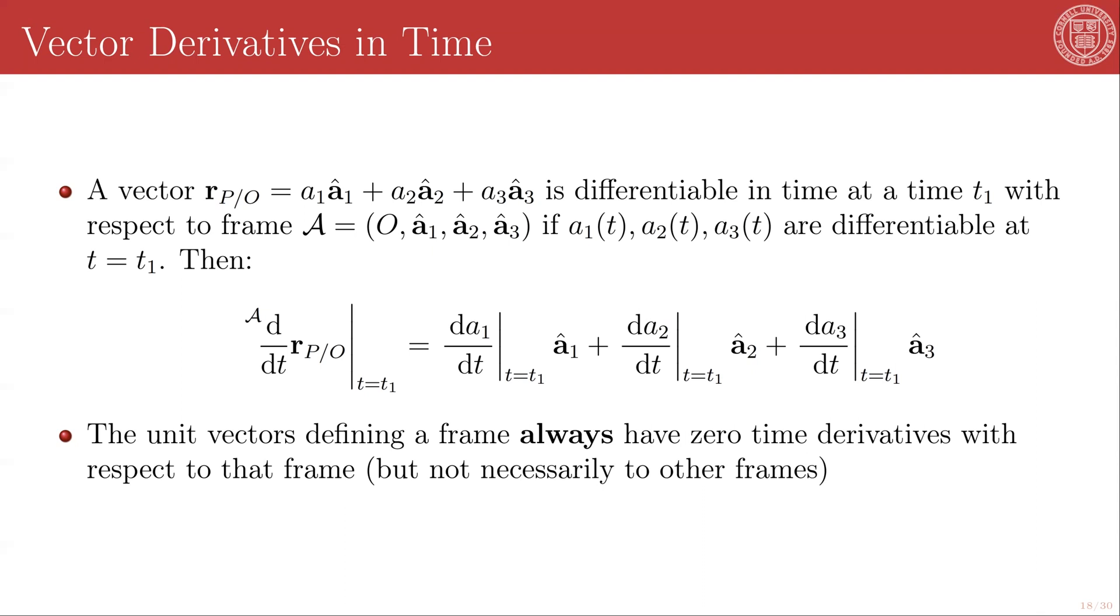So how do you take the derivative of a vector in time? Well, derivatives, you'll recall, are linear operators. This is how we get things like the chain rule and the product rule. And so if I have the derivative of a vector, then I can do my usual trick of splitting it up, and I will have the derivative of the magnitude of that vector times the unit direction of that vector.